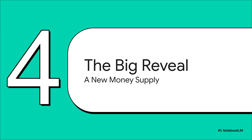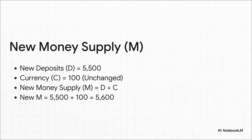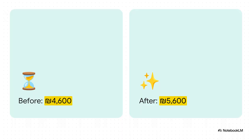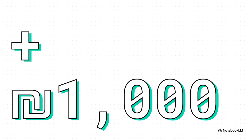We've seen the reserves go up and calculated the new supersized level of deposits, so now it's time for the big reveal. The money supply M is just deposits plus the cash people are holding. Our new multiplied deposits are 5,500. The cash in people's pockets didn't change — it's still 100. Add them together and you get a brand new total money supply of 5,600 shekels. We started with a money supply of 4,600, and after that one single action by the central bank and the power of the multiplier, it's shot up to 5,600. That initial 200 shekel injection resulted in a total increase of 1,000 shekels — multiplied 5 times over. We've solved the puzzle.